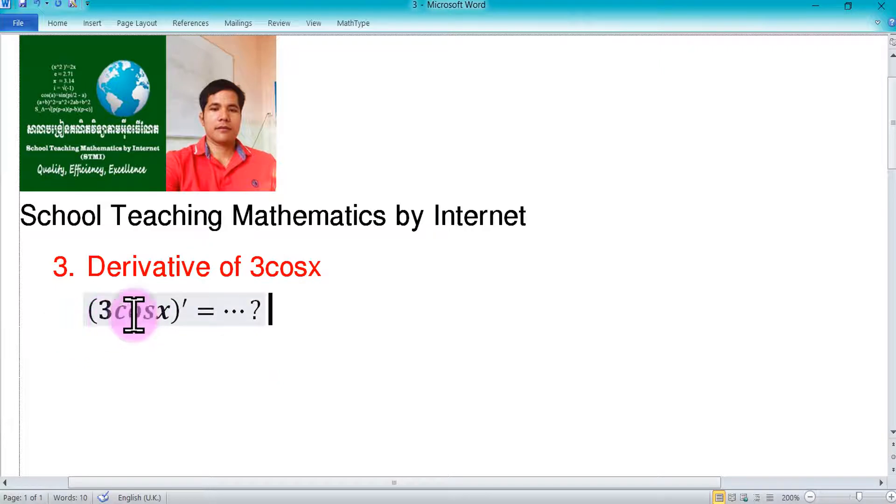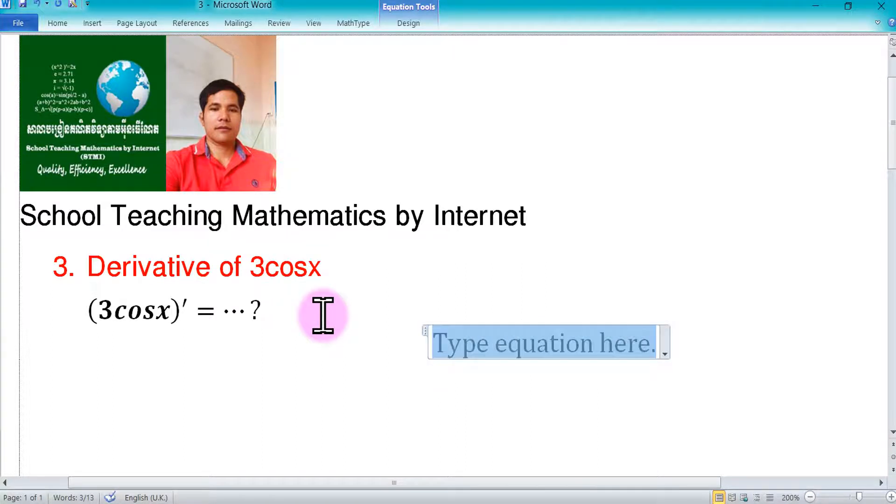Before we try to find the solution of the exercise, the first thing you need to know about is the formula. In this formula, I will show you about k, which is a real number, and u. A minute before you do the exercise in mathematics, the first thing you need to know is you have to remember the formula and which formula is suitable for the exercise. So in here, k is the real number, so it will be k times u. This is the formula.